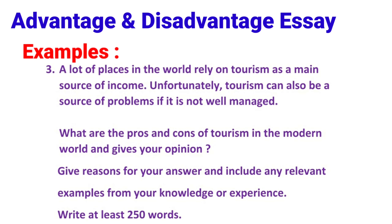Example 3: A lot of places in the world rely on tourism as the main source of income. Unfortunately, tourism can also be a source of problems if it is not well managed. What are the pros and cons of tourism in the modern world? Give reasons for your answer and include any relevant examples from your knowledge or experience. Write at least 250 words.